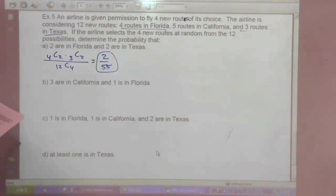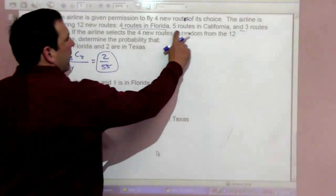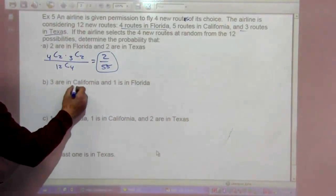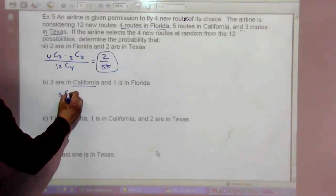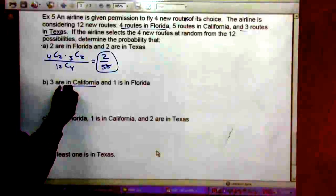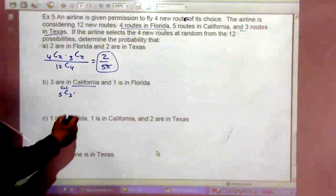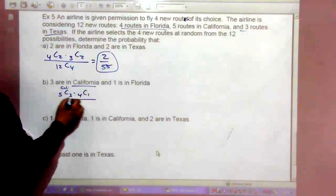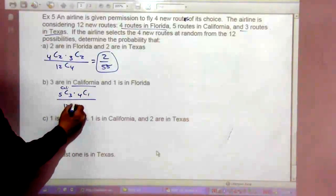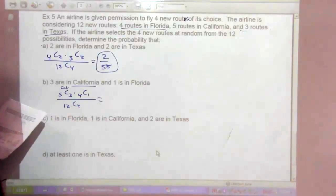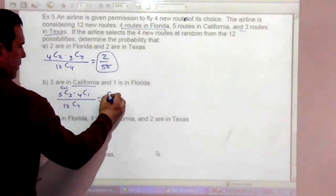What's the probability that 3 are in California and 1 is in Florida? California has 5 routes. So for California, that's 5 choose 3 times Florida was 4 choose 1 over 12 choose 4. That's 8 over 99.